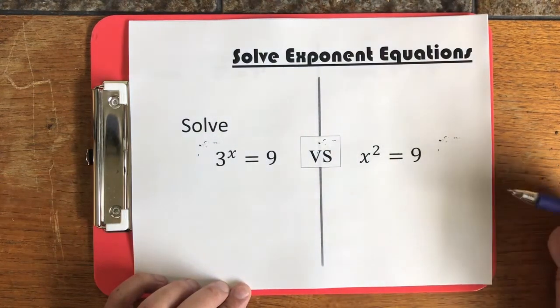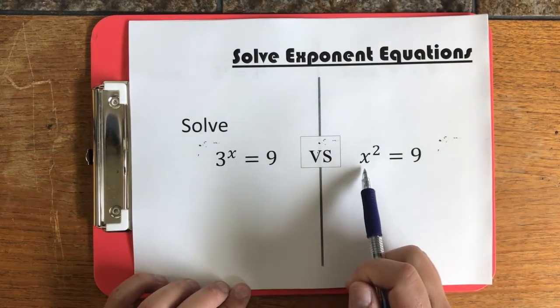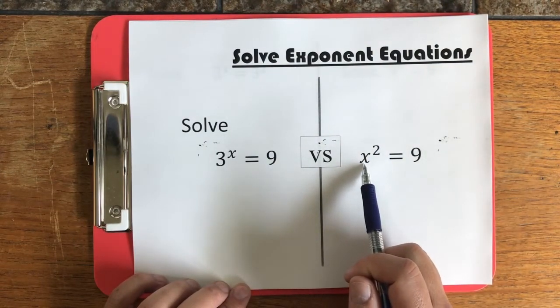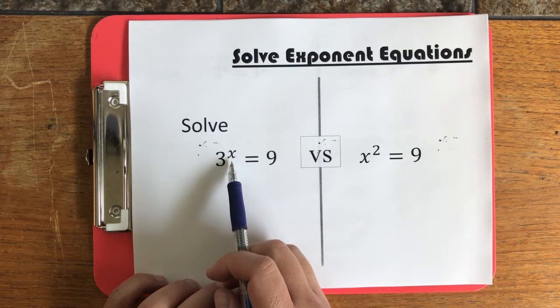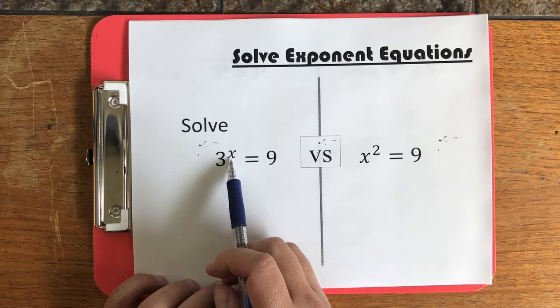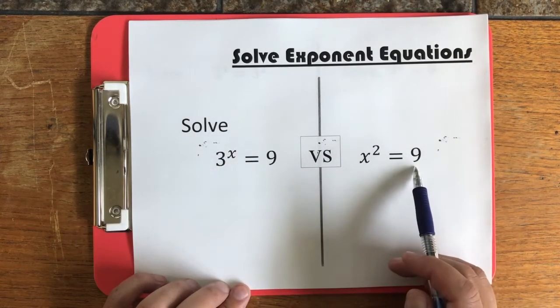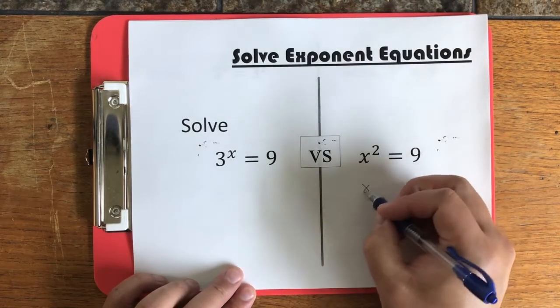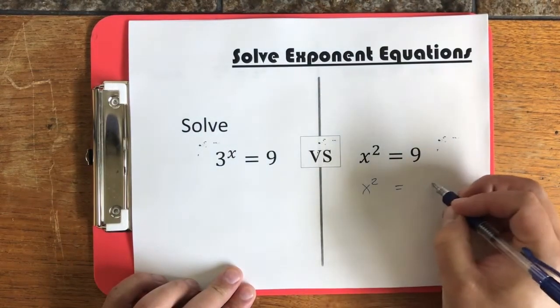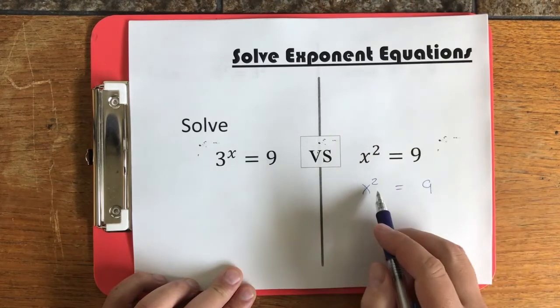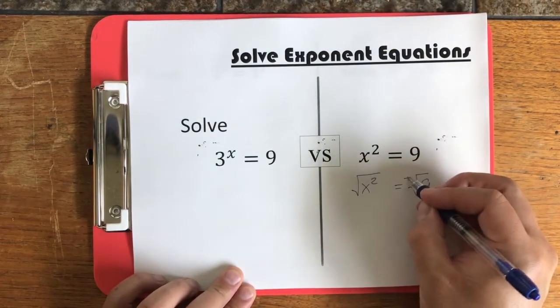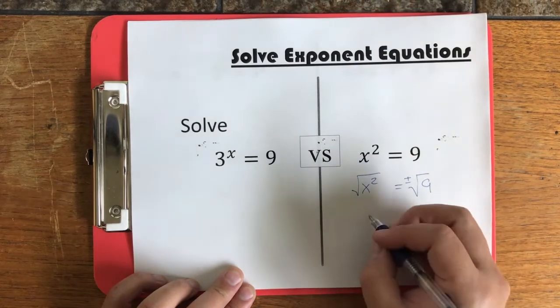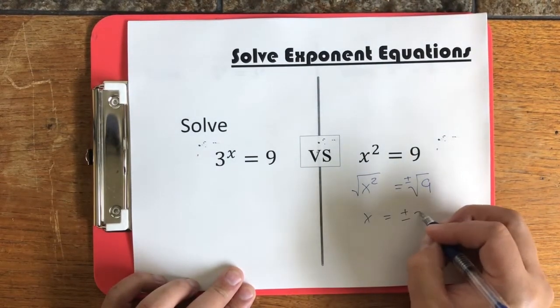So let's make sure we understand why. Previously, we solved problems that had an x in the base of the exponent. In these new problems, we're going to solve problems that have a variable in the exponent. Now, the way we solved these problems previously was in order to get rid of a square, we square-rooted both sides. And when we square-rooted both sides, we also added a plus and minus, and then we got x is equal to plus or minus 3.